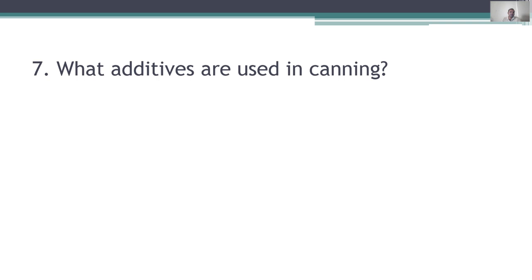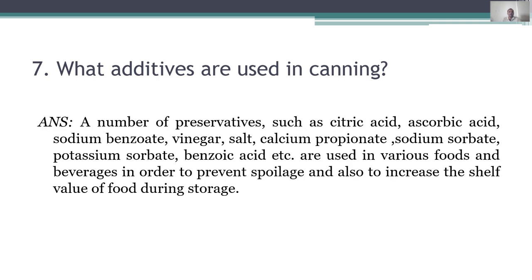Seventh question: what additives are used in canning? A number of preservatives such as citric acid, ascorbic acid, sodium benzoate, vinegar, salt, calcium propionate, sodium sorbate, potassium sorbate, and benzoic acid are used in various foods and beverages to prevent spoilage and increase the shelf life of food during storage.